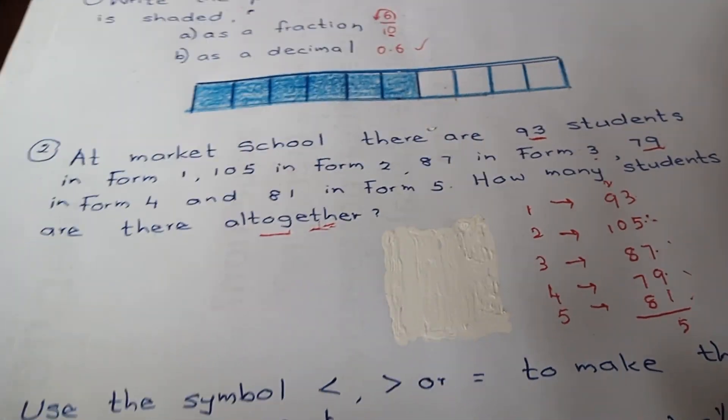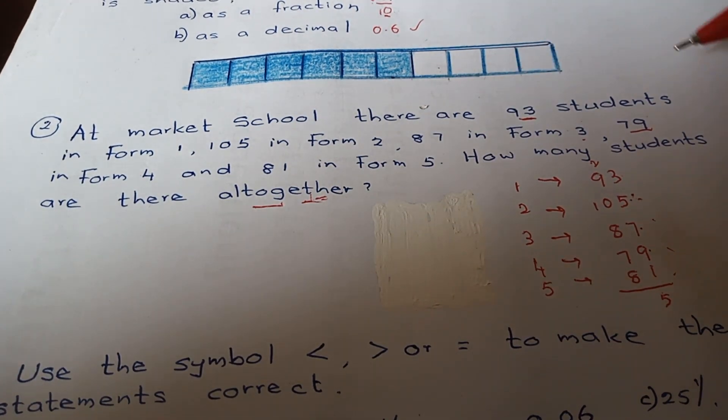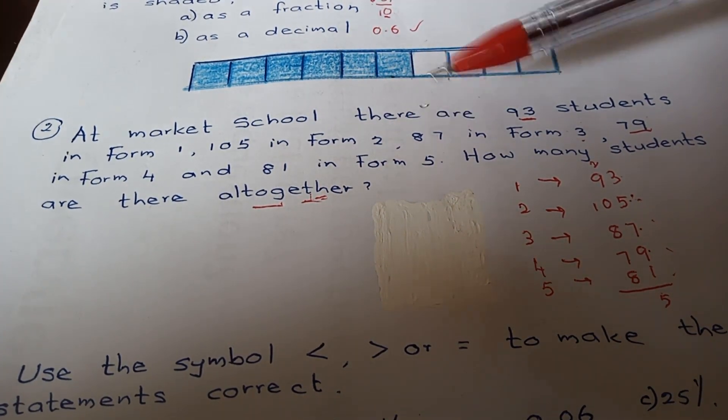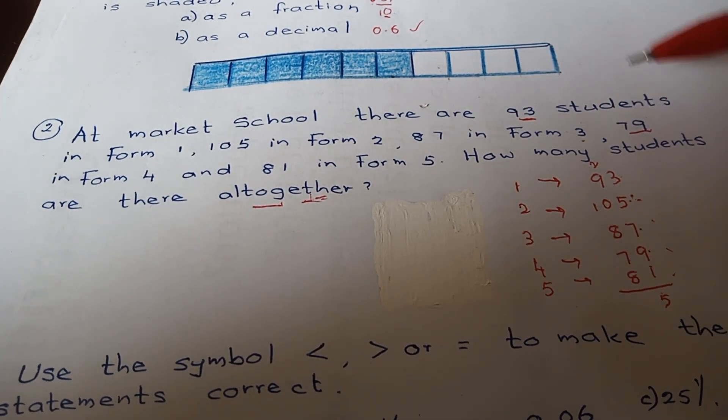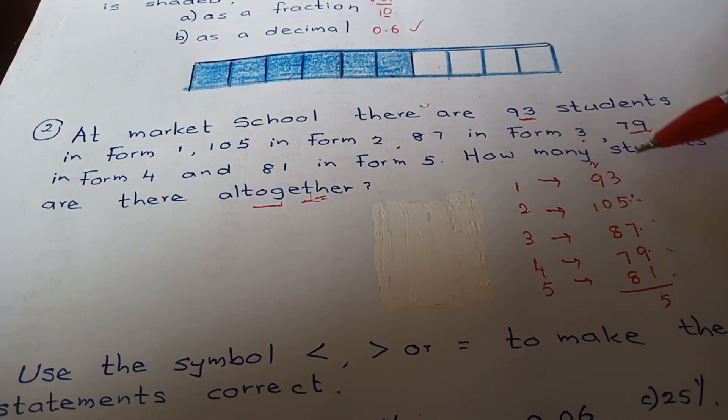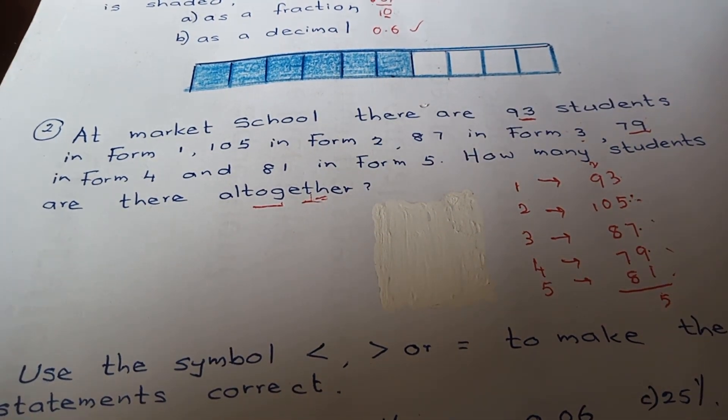Question number two: At Market School there are 93 students in Form 1, 105 in Form 2, 87 in Form 3, 79 in Form 4, and 81 in Form 5. How many students are there altogether? Altogether we have to add.